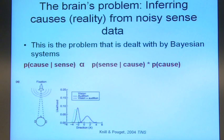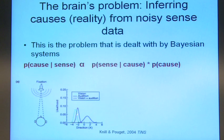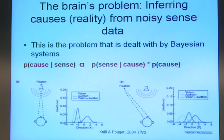This is mathematically a fairly trivial thing to compute — your belief that it is at this particular point. Now what happens if your visual system gets noisier? Say you were looking at it out of the corner of your eye.